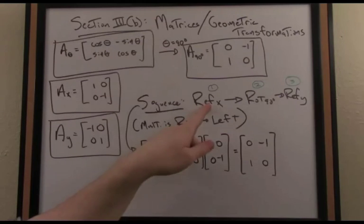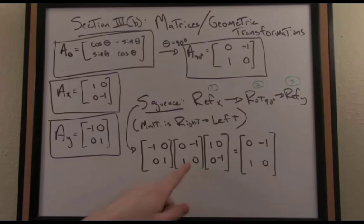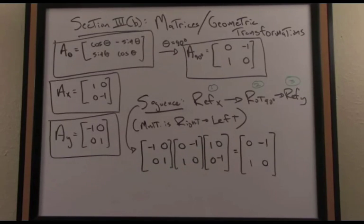So in other words, my first action starts with the right matrix. There's my reflection about the x-axis, then my rotation matrix, then my reflection subsequently about the y-axis. So if I've gone ahead and multiplied all those matrices together, you can check this and you get that final matrix.